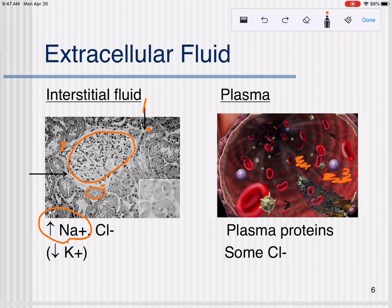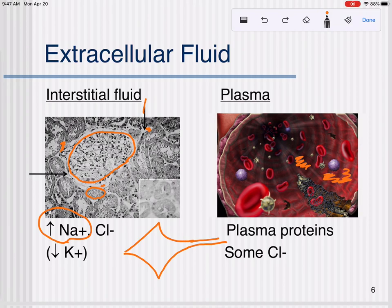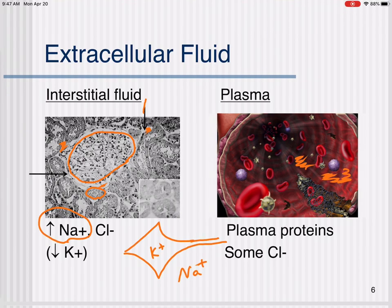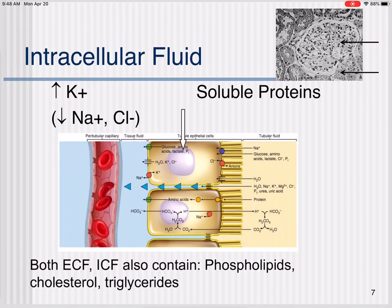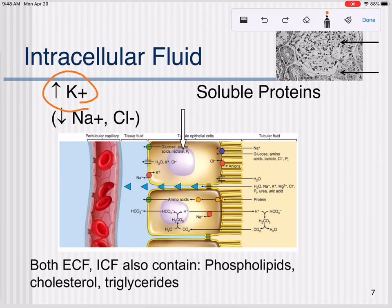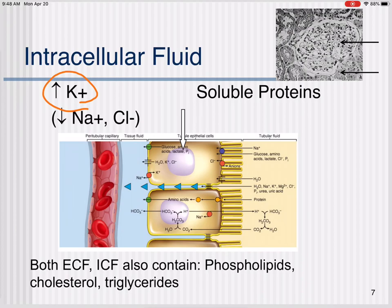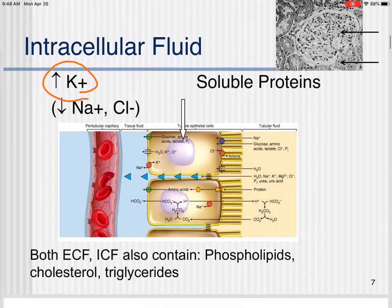In the extracellular fluid, this is where we find most of the body's sodium. If you remember from the nervous system chapter, we talked about nerve impulses and the flow of ions — there's more sodium outside the cell. Conversely, we tend to find a higher amount of potassium in the intracellular fluid. So: more sodium outside the cells, more potassium inside.